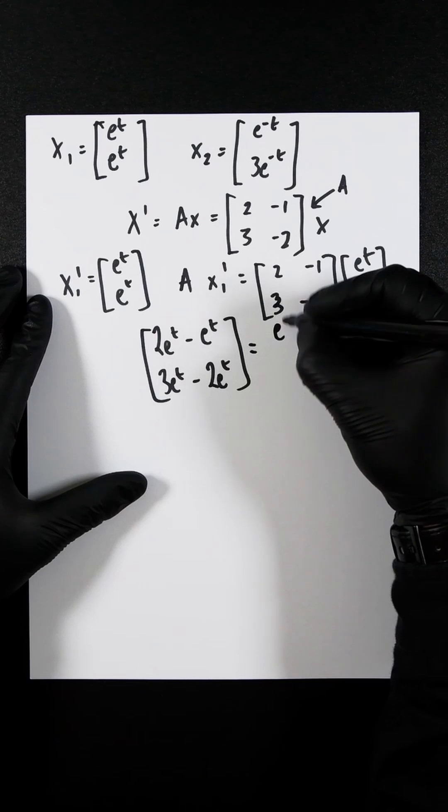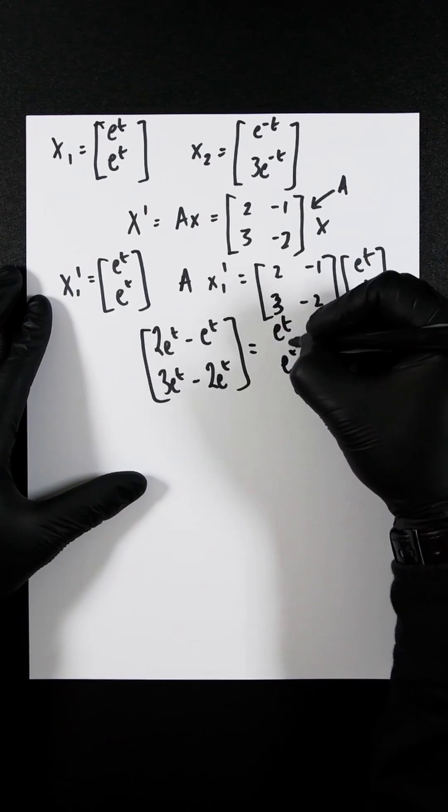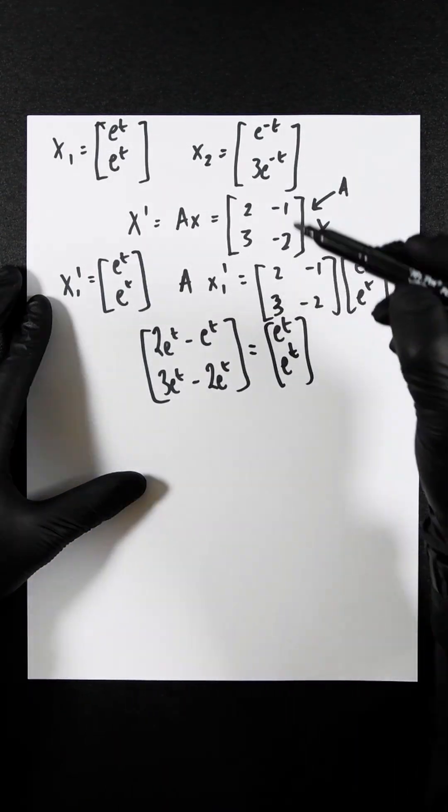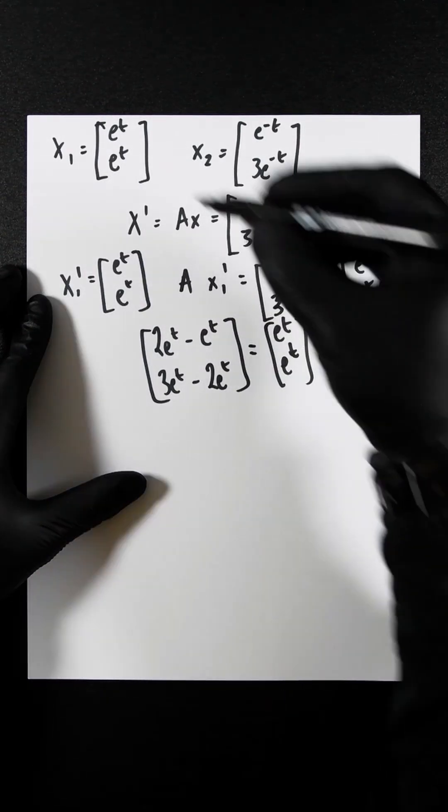And that's going to be e to the t and e to the t. Therefore, we can verify that this vector function is a solution of this homogeneous system because it equals the same.